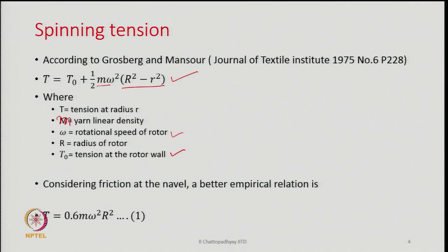Considering friction at the navel, a better empirical relationship is: T = 0.6·m·ω²·R², since T₀ is usually very small and sometimes neglected when estimating tension. As the yarn moves from the rotor, it comes into contact with metallic surfaces — the trumpet or navel being one of them. The yarn arm within the rotor rotates at very high speed, and simultaneously the yarn moves along its own axis toward the package.